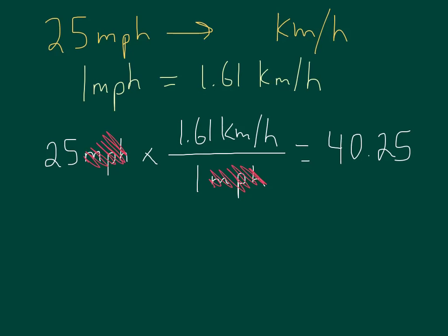And if we look, the only unit left is kilometers an hour, which is exactly what we wanted. So 25 miles per hour would be equal to 40.25 kilometers an hour.